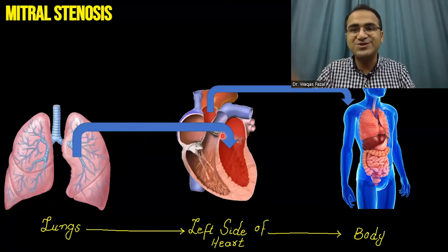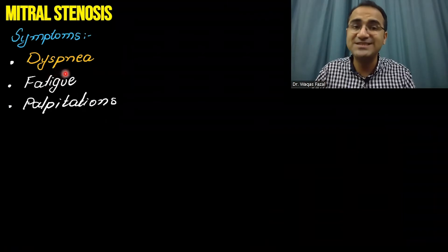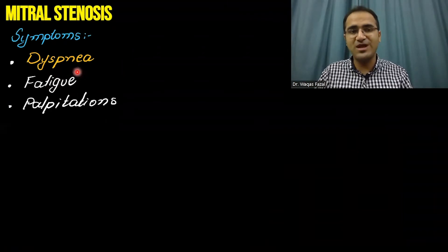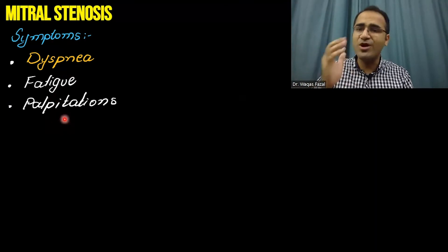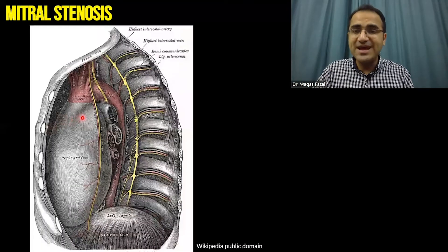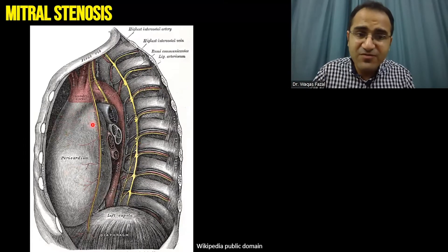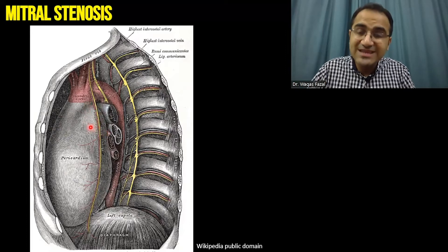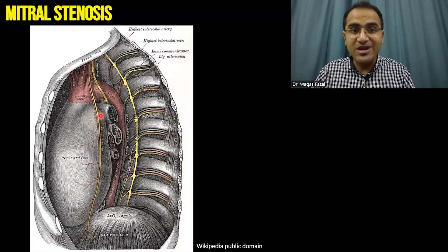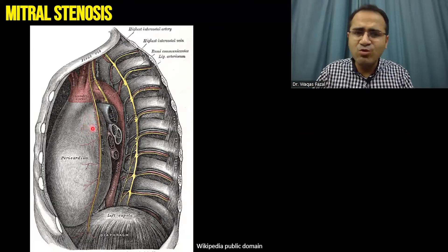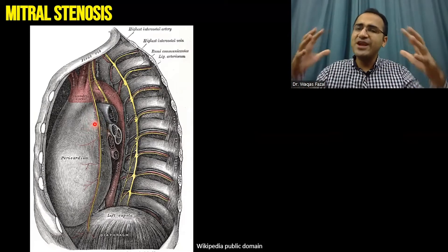The simple basic physiology explains the symptoms. Patients will present with dyspnea, shortness of breath, fatigue, and palpitations. The heart will be trying to pump blood more and more. Remember that the left atrium lies on the posterior aspect of the heart — the left atrium forms the most posterior part of the heart. In mitral stenosis, there is left atrial enlargement.